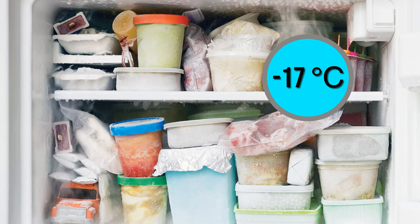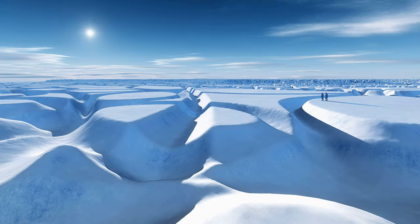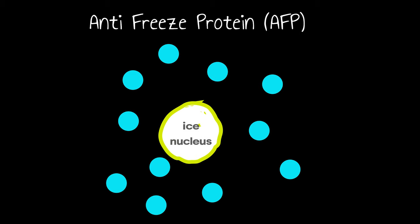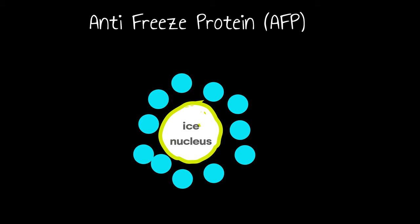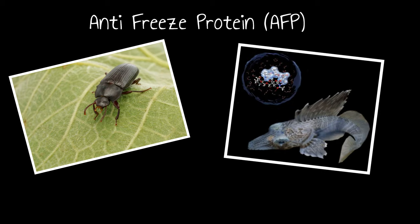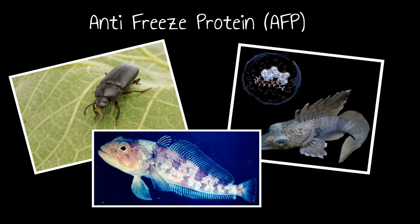Animals living in cold climates have natural antifreeze proteins, or AFPs, produced in their bodies. Antifreeze proteins allow cells to survive in sub-zero conditions. They bind to ice crystals in the blood in order to prevent crystallization. AFPs have been found in various organisms such as fish, insects, and other terrestrial arthropods.